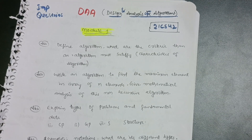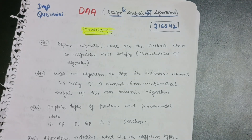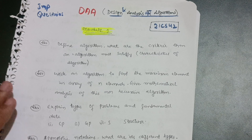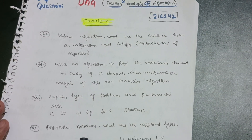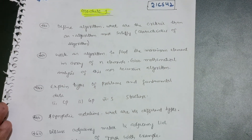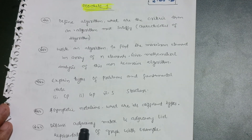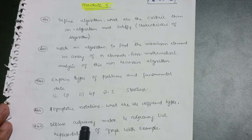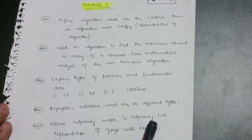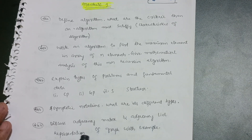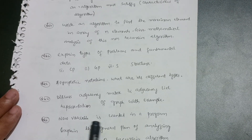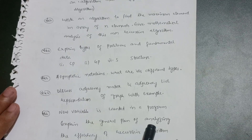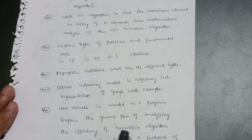Fourth: asymptotic notations — what are the different asymptotic notations. This may be an important question in this subject. Fifth: discuss adjacency matrix and adjacency list representation of a graph with example. Sixth: how variables are counted in a program — explain the general plan of analyzing the efficiency of a recursive algorithm.